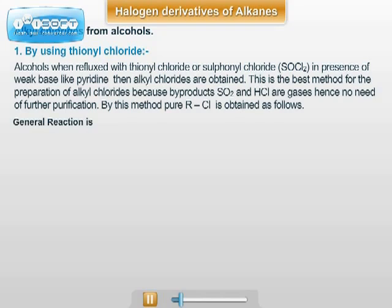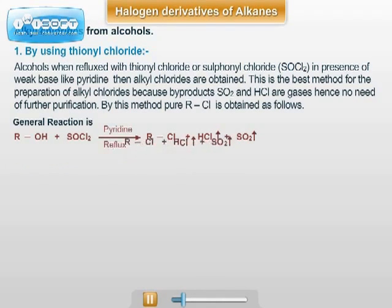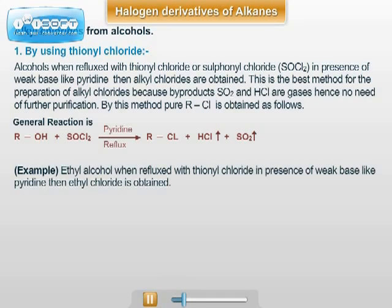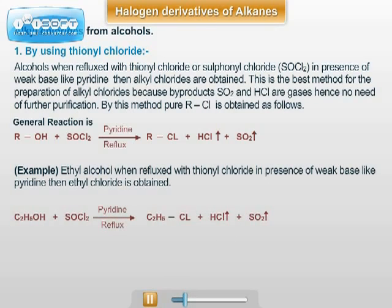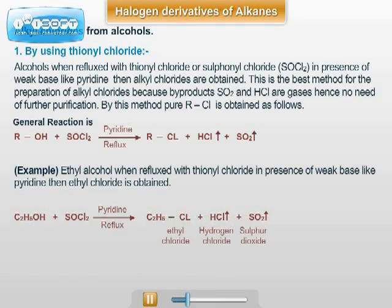The general reaction is shown as follows. Ethyl alcohol when refluxed with thionyl chloride, ethyl chloride is formed. This reaction of alcohol with thionyl chloride is carried out in the presence of weak base pyridine, and that is why in the following example, on the arrow, the reaction condition pyridine and reflux is shown.